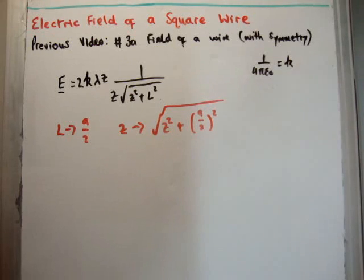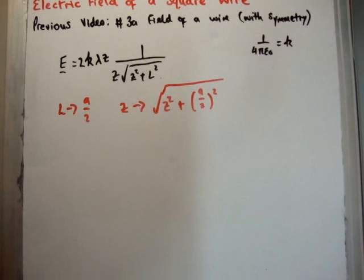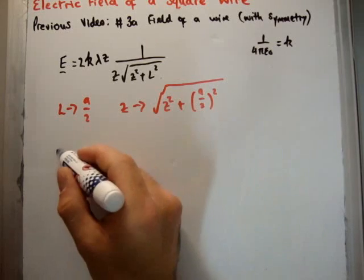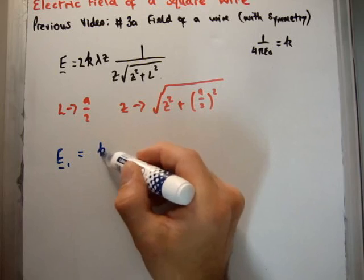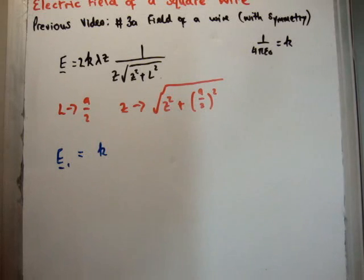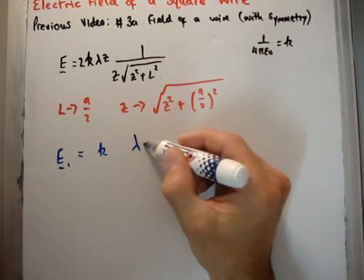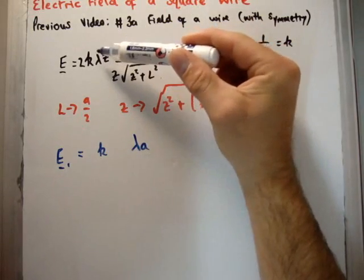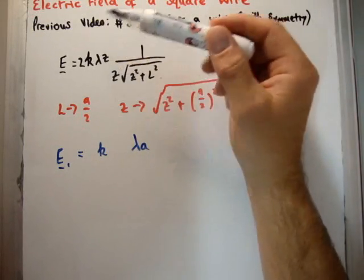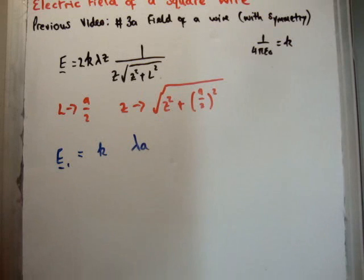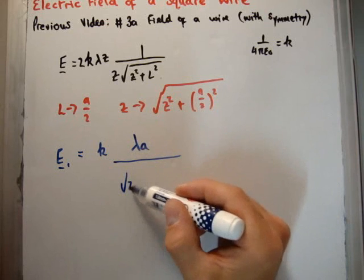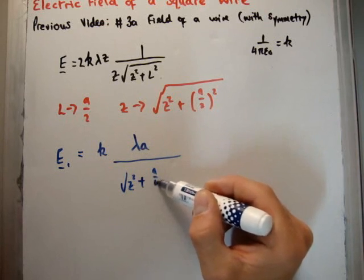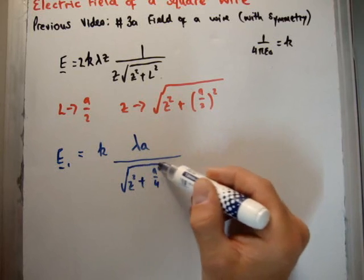So if you plug in those, we get the field for a single wire, a single line segment. So the field is going to be equal to k, one over four pi epsilon zero, lambda A, because it's going to be twice A over 2. Z is going to be twice A over 2. And we're going to divide by z squared plus a squared over four, square root of it.